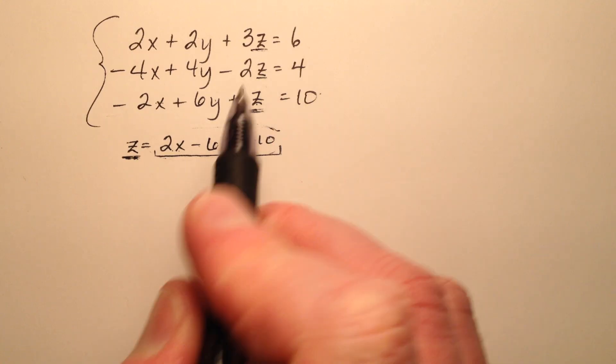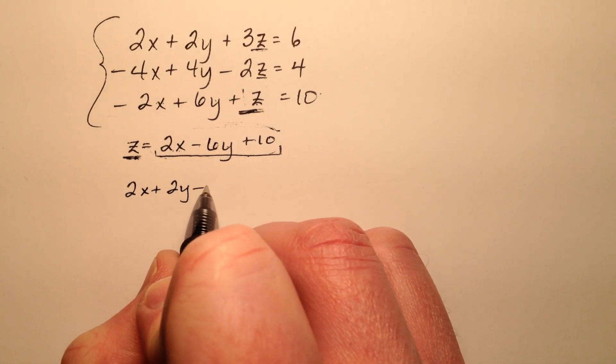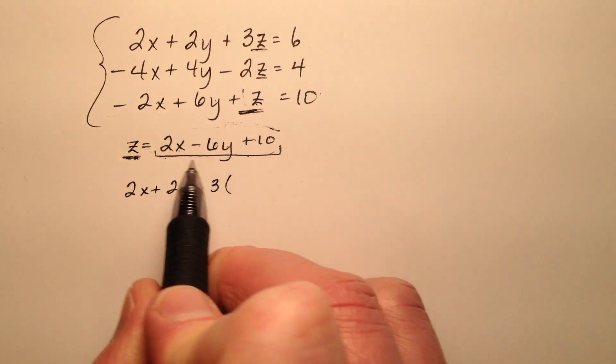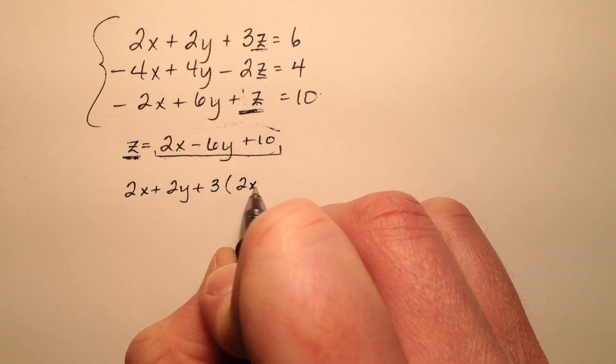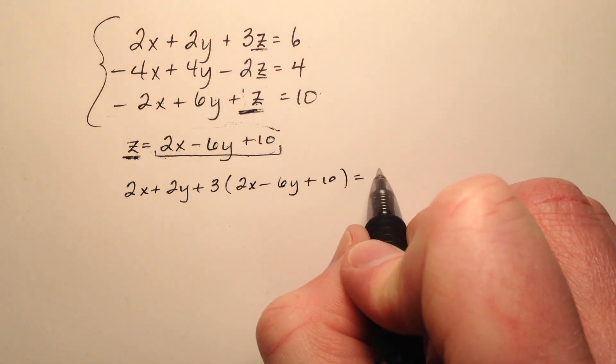So let's go ahead and do it into the first equation. I have 2x plus 2y plus 3z, and z is going to be 2x minus 6y plus 10, and that's going to equal 6.